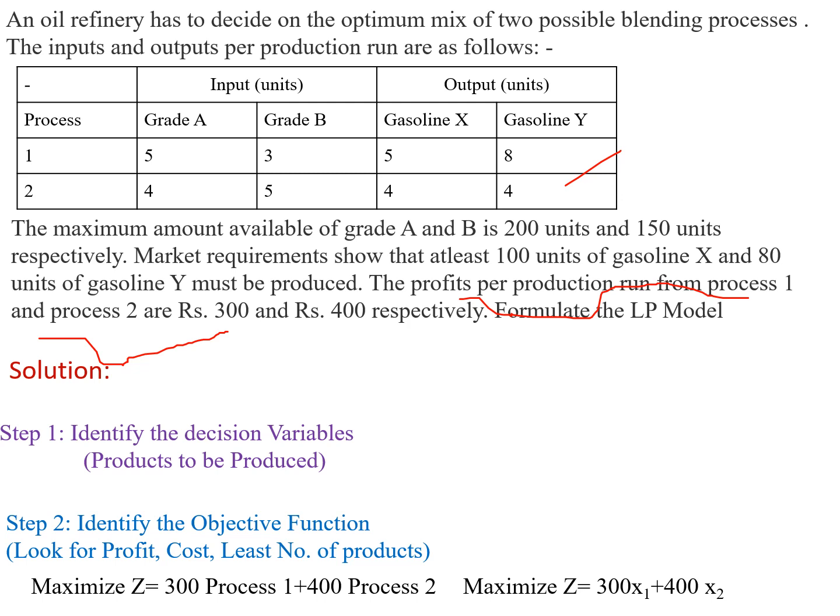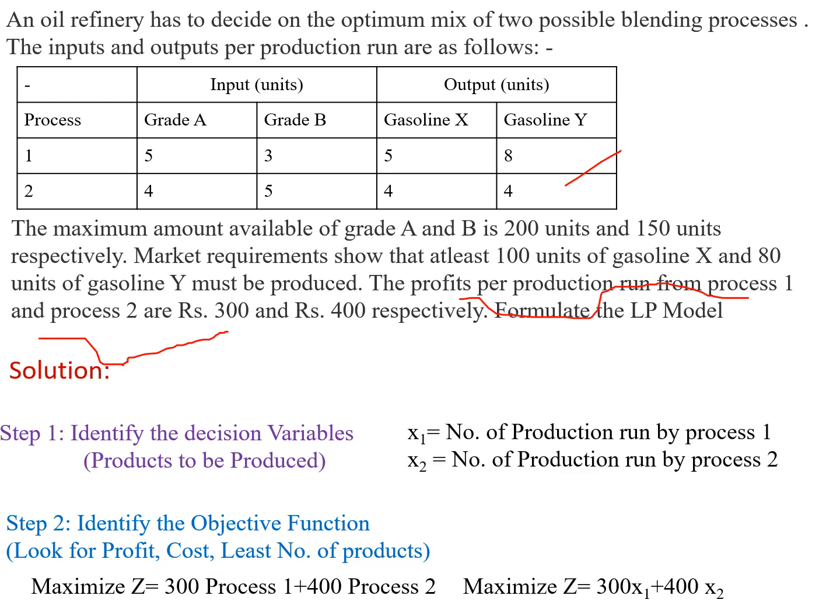So maximize profit Z = 300 x1 + 400 x2. The objective function is always expressed in terms of the decision variables. Here, x1 equals the number of production runs by process 1, and x2 equals the number of production runs by process 2. So x1 and x2 are the decision variables.